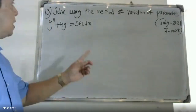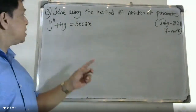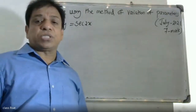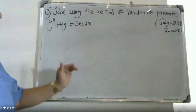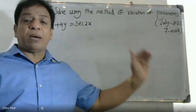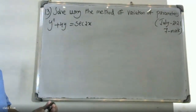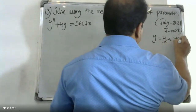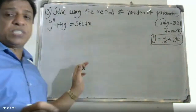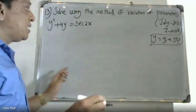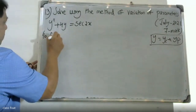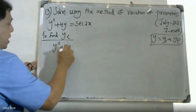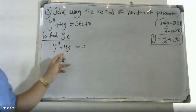Good morning students. Using the method of variation of parameters, the general solution is y equal to yc plus yp, where yc is the complementary function and yp is the particular solution. To find yc, from the left-hand side: y double dash plus 4y is equal to 0.